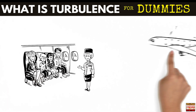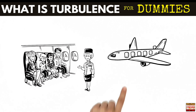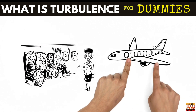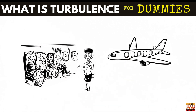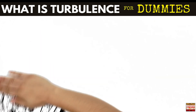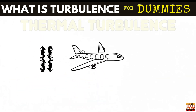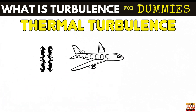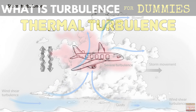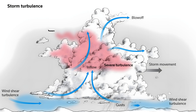She explains that planes, especially their wings, are designed to be flexible. This way they are able to withstand high forces and won't break due to turbulence. Additionally, there are three types of turbulence. The first one is thermal turbulence, created by rising air like cumulus clouds or thunderstorms.